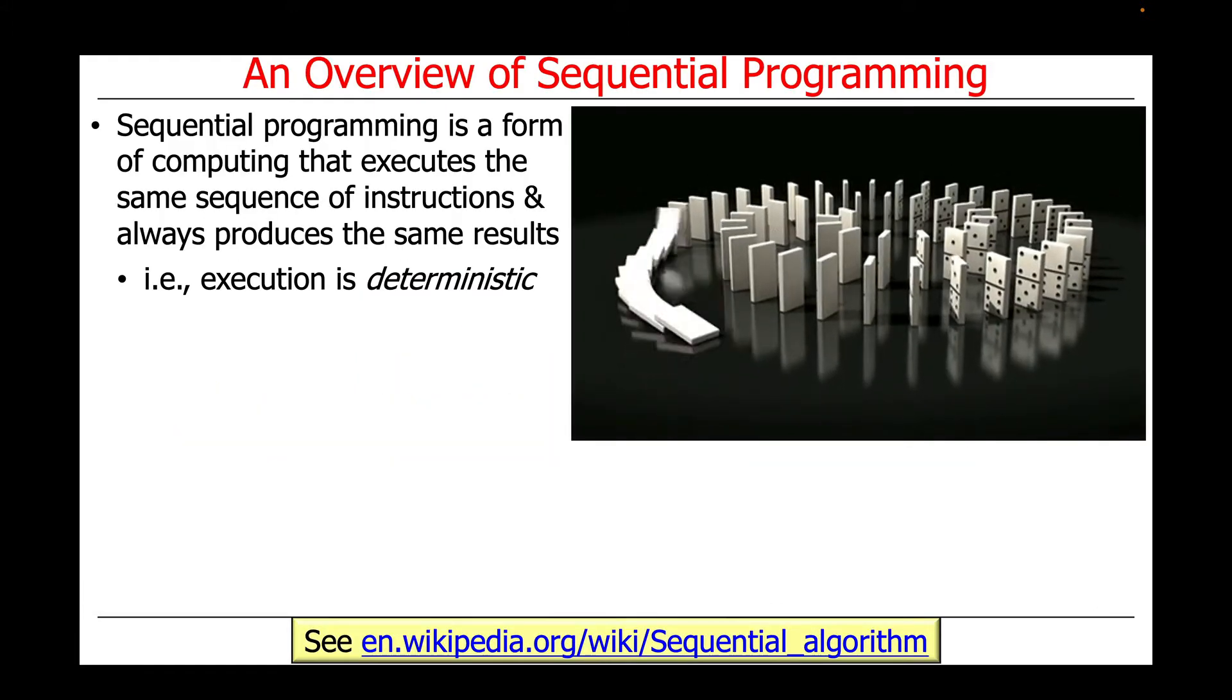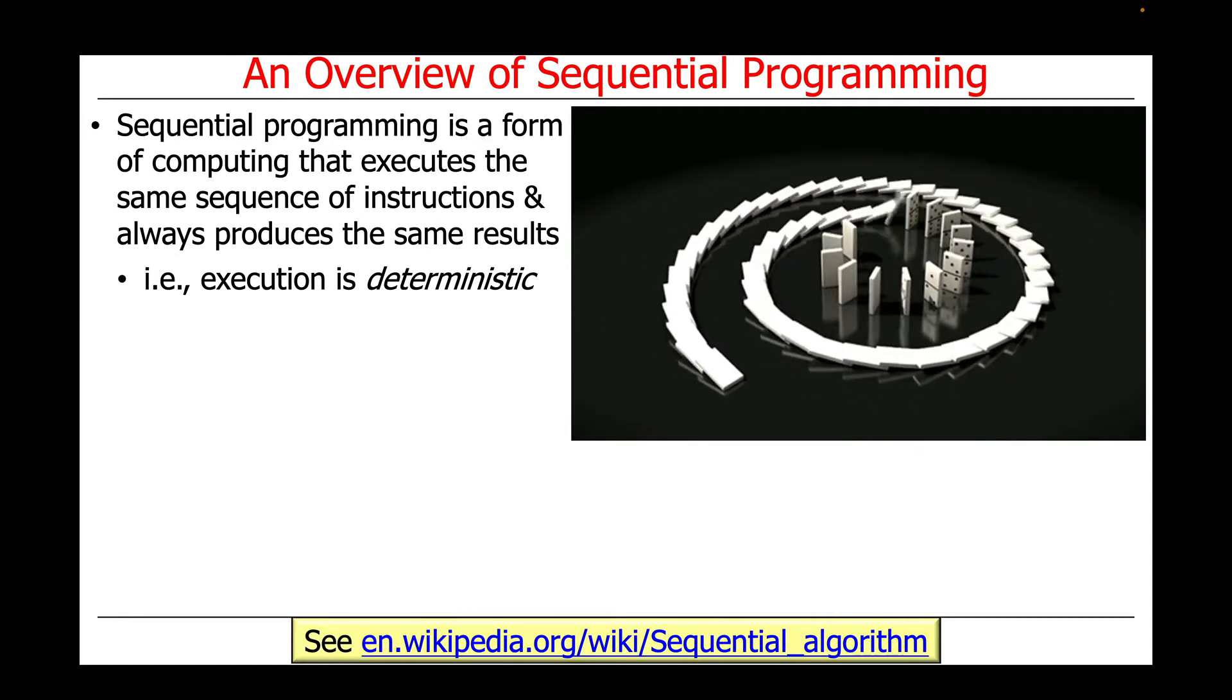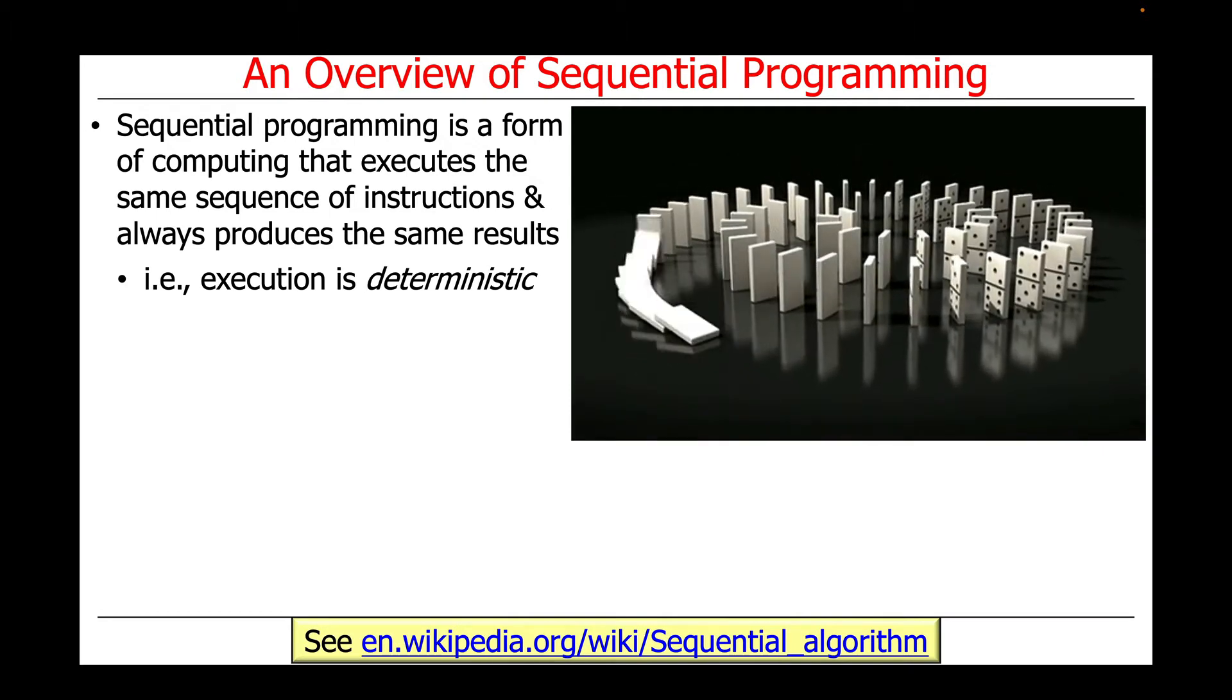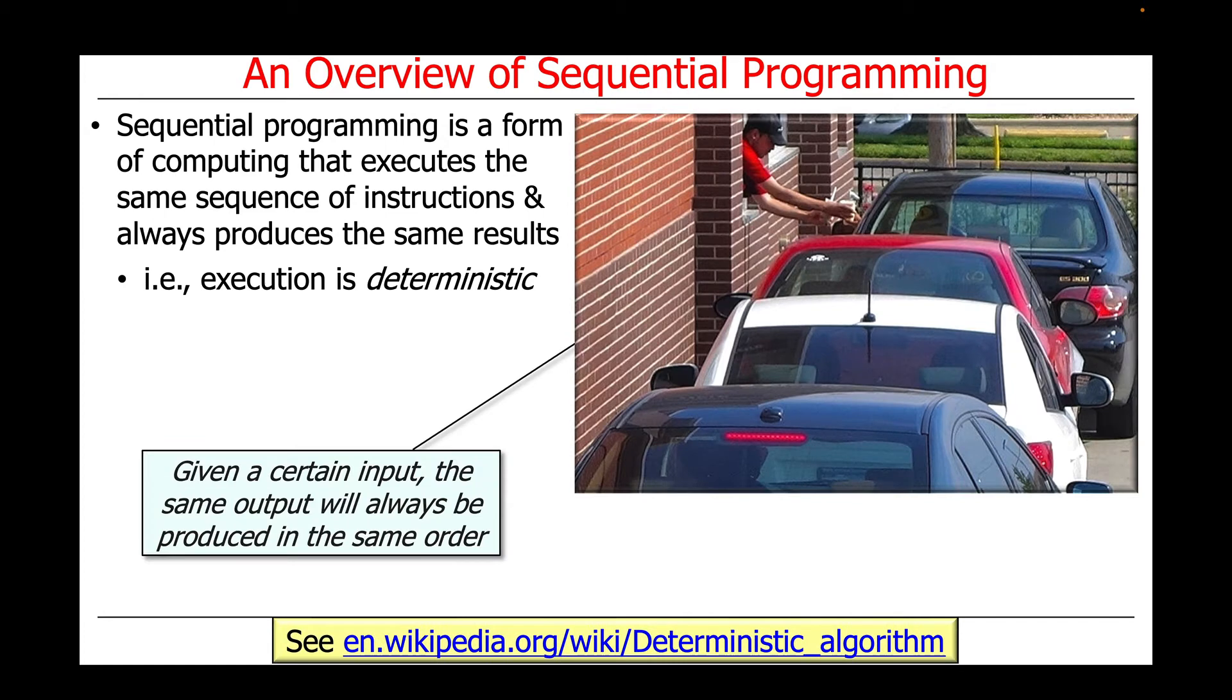So what is a sequential program? A sequential program is a form of computing that executes the same sequence of instructions and always produces the same results. That's another way of saying that the execution is deterministic. It means that given a certain input, the same output will always be produced in the same order.